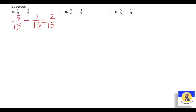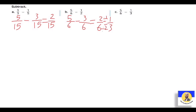The next: 5 over 6 minus 1 over 2. الـ six هي أصلاً 2 × 3، يبقى الـ LCM ما بينهم هتكون الـ six. الـ two نقدر نغيرها نخليها six. يبقى الـ first fraction زي ما هي. الـ two بقت six: عملنا × 3، يبقى 1 × 3 = three over six. نعمل minus: 5 - 3 = two over six. ممكن نعملها simplify: divided by two up and down = one over three.